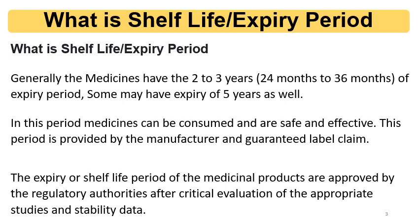Generally, medicines have an expiry period of 2 years, and sometimes 3 years — that is, 24 to 36 months. For some formulations and medicines, an expiry period of 5 years is given. You can see the label of the medicine to understand the expiry period or expiry date, and you can also find the shelf life period from the patient information leaflet, which provides information about the storage period of 2 or 3 years. During this period, the medicine can be consumed and is safe and effective.